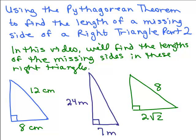This is part 2 of using the Pythagorean theorem to find the length of a missing side of a right triangle. In this video, we'll find the lengths of the missing sides in these three right triangles.